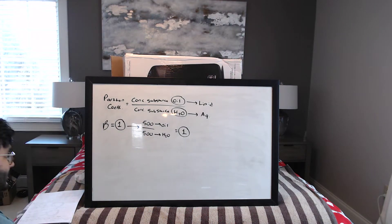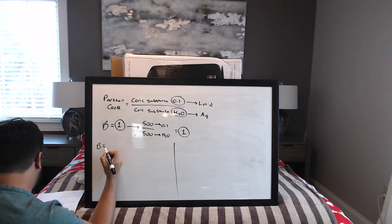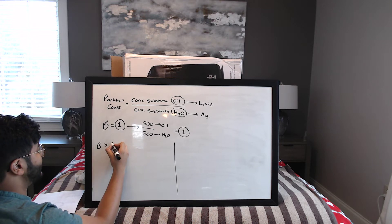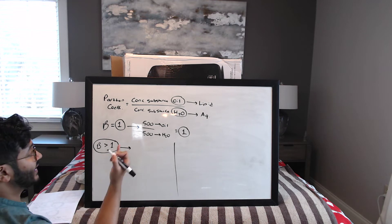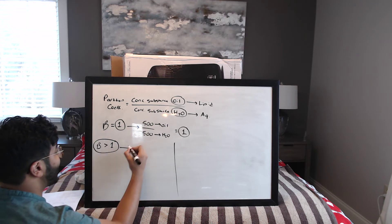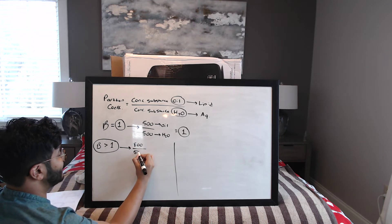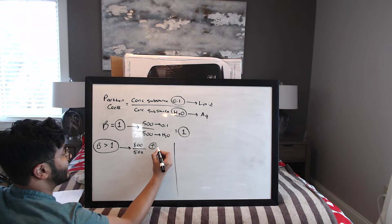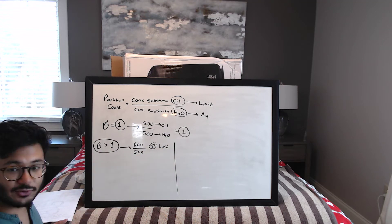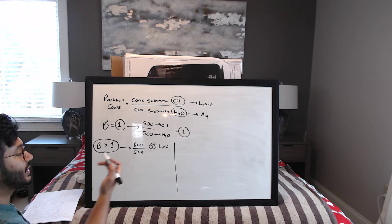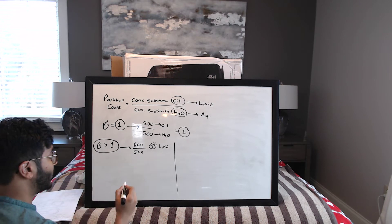When the partition coefficient is greater than one, the concentration in the oil phase is higher than in the water phase — say 800 versus 500. Dividing gives a number greater than one, which tells you the substance has a preference for the lipid phase.